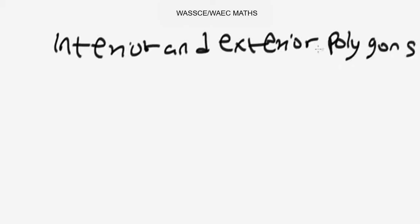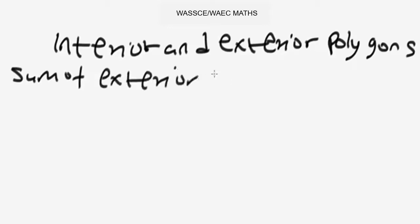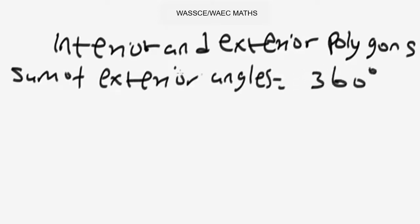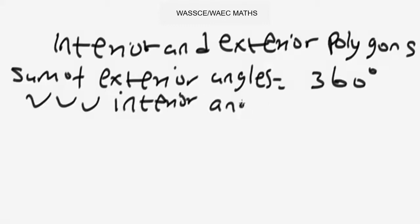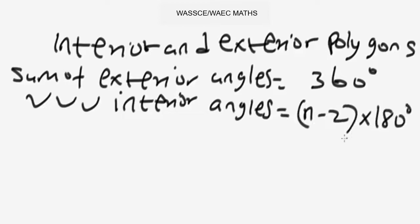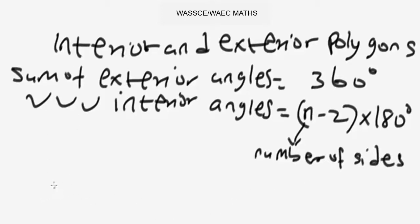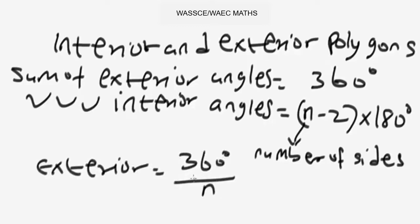Now we are looking at the concept of interior and exterior angles of polygons. Note that the sum of exterior angles equals 360 degrees. The sum of interior angles equals (n minus 2) times 180 degrees, where n is the number of sides. Also note that for a single exterior angle we use the formula: exterior angle equals 360 degrees divided by n.